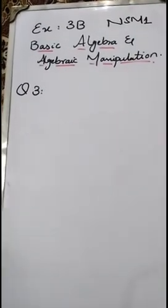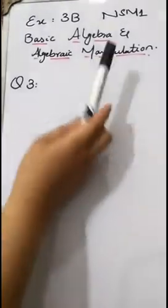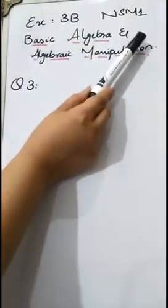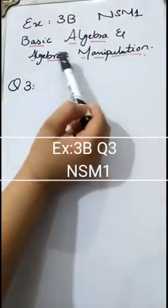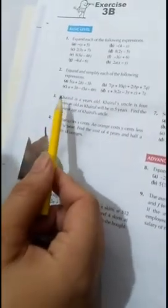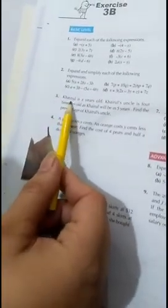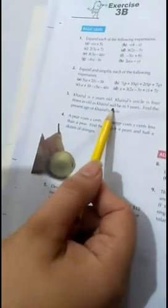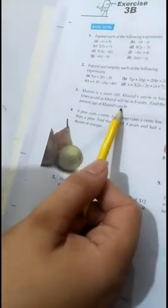Assalamu alaikum to everyone, welcome to mathematics. Today we will do exercise 3B, NSM1 basic algebra and algebraic manipulation, question 3. First of all, we read the word problem. In question 3, Harold is x years old. Harold's uncle is four times as old as Harold will be in five years. Find the present age of Harold's uncle.